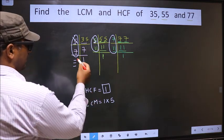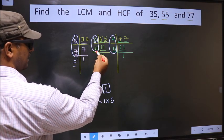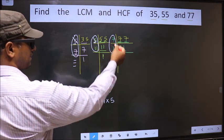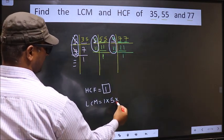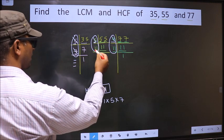Next. Here we have 7. Do we have 7 here? No. Do we have 7 here? Yes. So you cut 7 and write here.